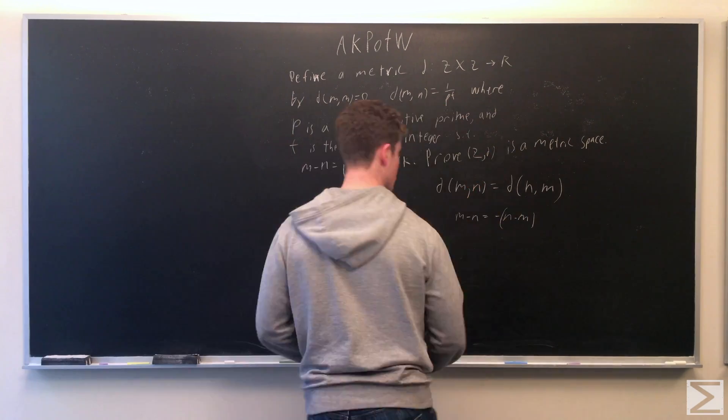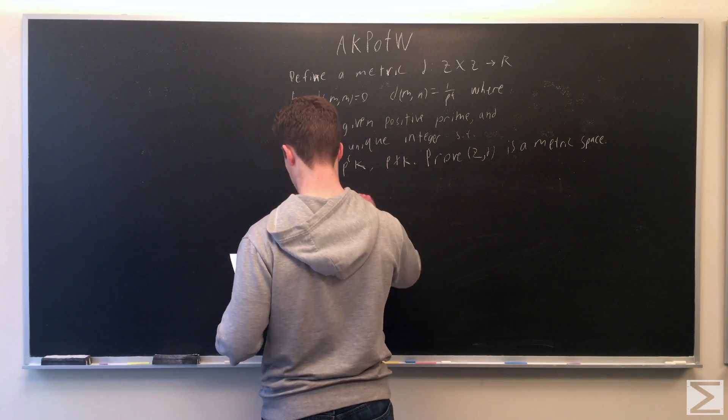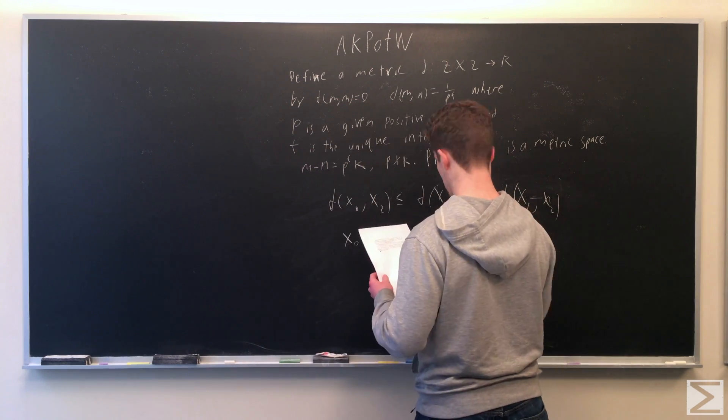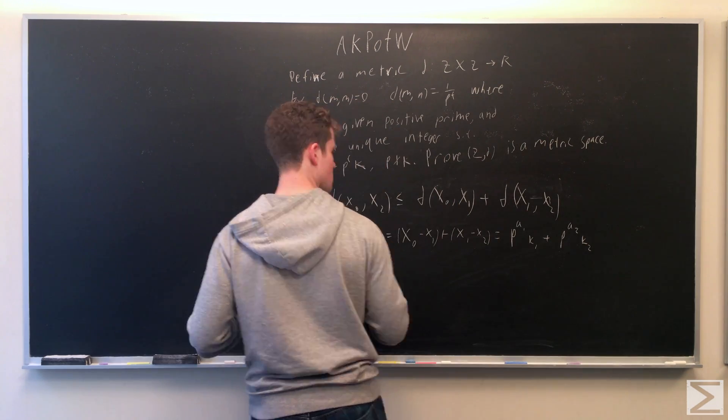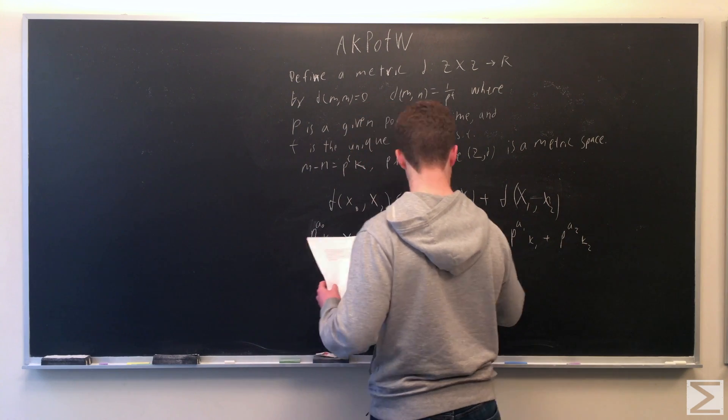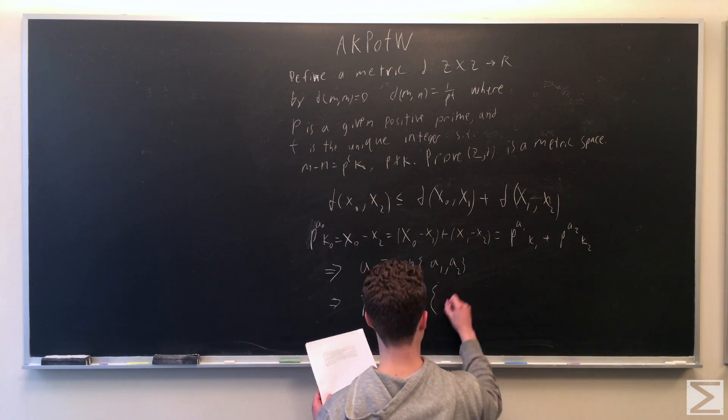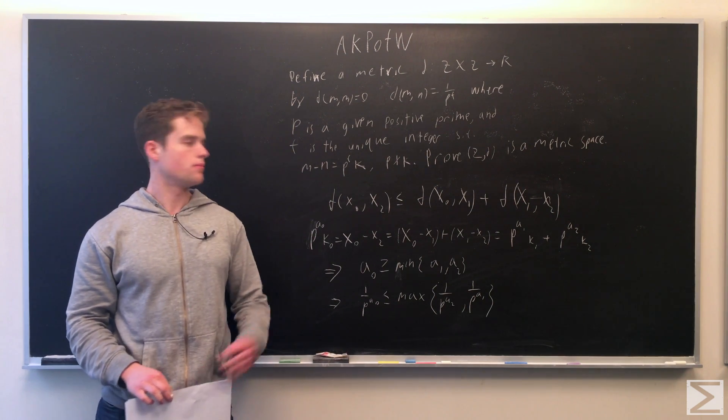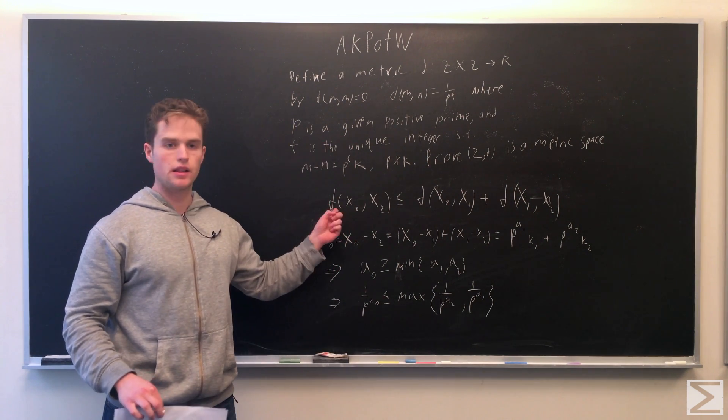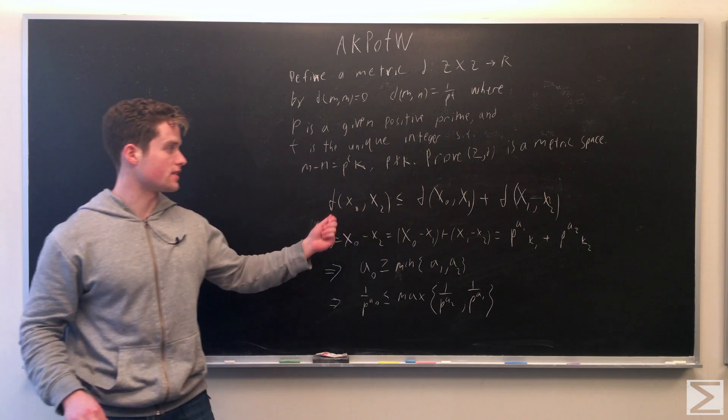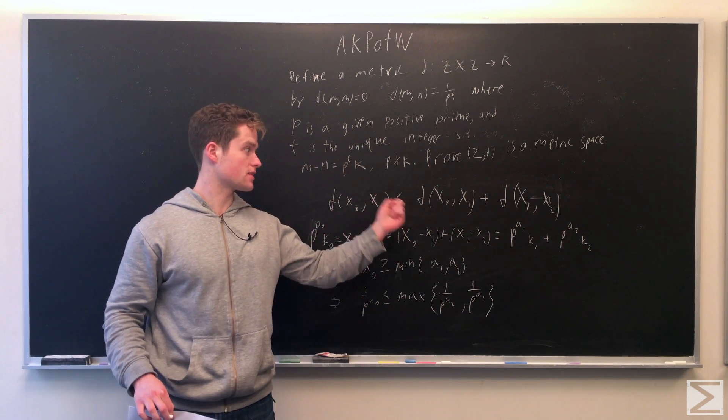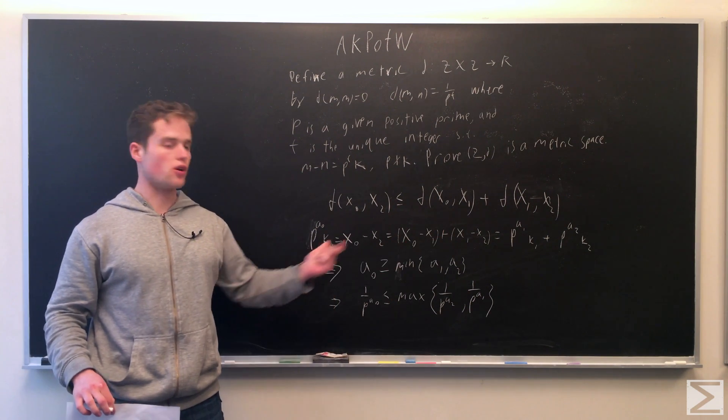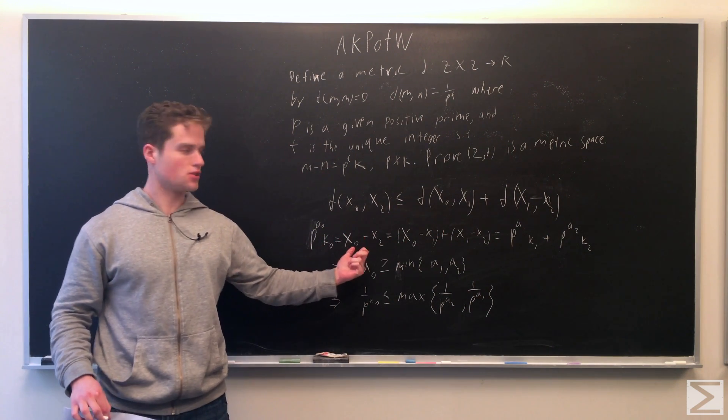So the last axiom we want to prove is: given three points in our metric space, the distance between x0 and x2 is less than or equal to the distance between x0 and x1 plus x1 and x2.